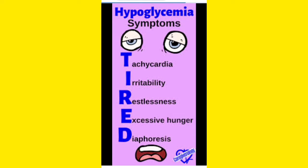T means tachycardia — that means fast heart rate, fast heartbeat. So the patient will have tachycardia. Next is I: irritability. The patient is very irritable. That is I.